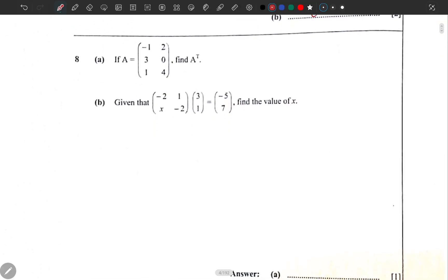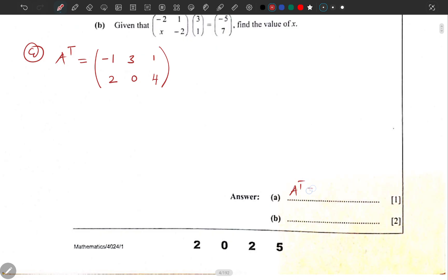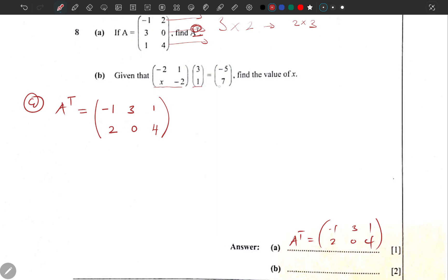Question 8: If A is equal to that matrix and B is this, find A transpose. A to the power T means A transpose. How many rows do we have? Three rows and two columns. Meaning if you want to transpose this matrix, we need to change this order to 2 by 3. We swap them, meaning each row becomes a column. So negative 1 and 2 becomes a column, 3 and 0 becomes a column, 1 and 4 becomes a column. You come here and report: A transpose is equal to (-1, 3, 1; 2, 0, 4).